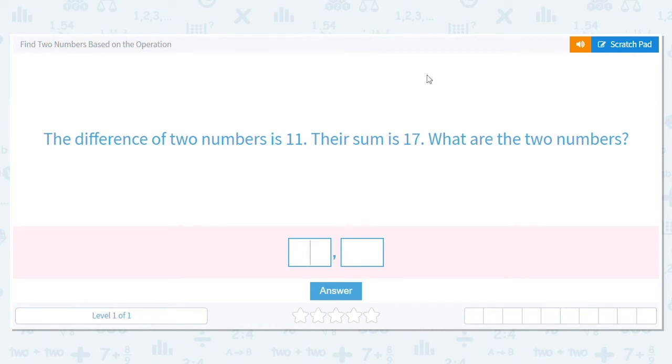Okay, we need to find two numbers based on the operation. So that basically means we're going to be given clues and we have to figure out what numbers fit the clues.